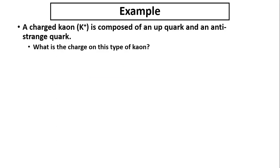Next one, a charged kaon is composed of up quark and anti-strange quark. What is the charge on this type of kaon? Look at your reference table. The up quark has positive two-thirds and anti-strange quark.